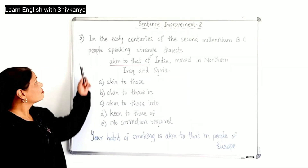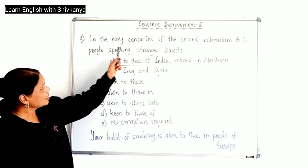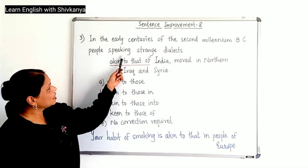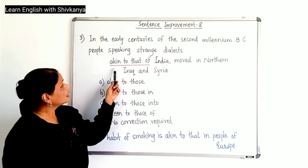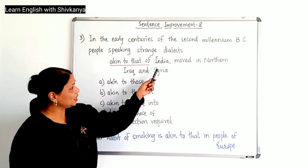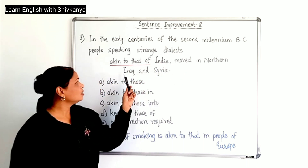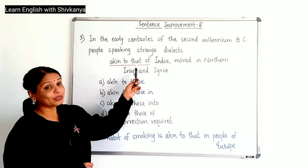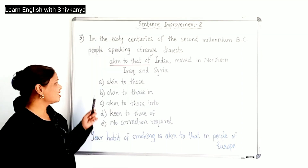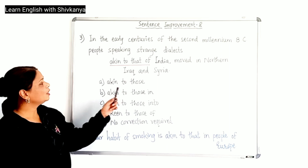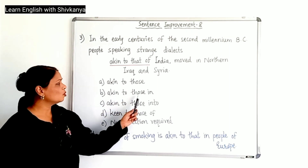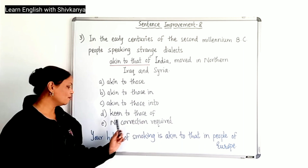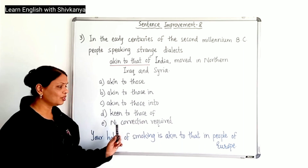The third sentence: In the early centuries of the second millennium BC, people speaking strange dialects akin to that of India moved in northern Iraq and Syria. The wrong phrase is 'akin to that of,' and the options are: akin to those, akin to those in, akin to those into, akin to those of, and no correction required.